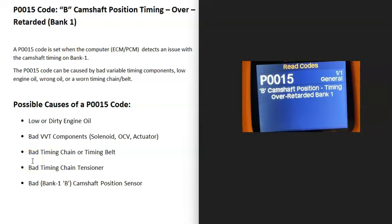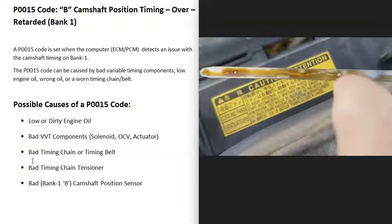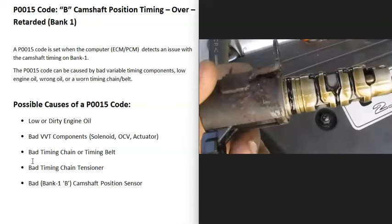Some possible causes of a P0015 code: the first thing to do is check your engine oil. Be sure it's not low or really dirty, because low or dirty engine oil can affect the variable valve timing components. So first thing to do is make sure the engine oil is not low and that it's not dirty.